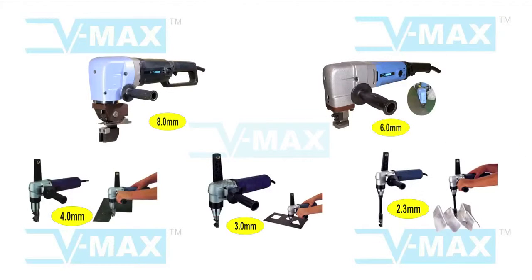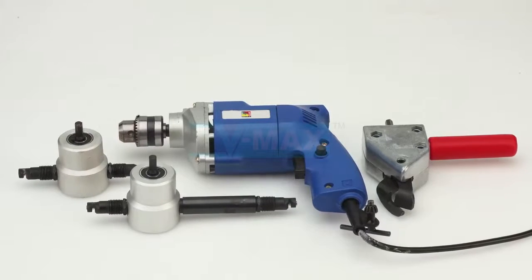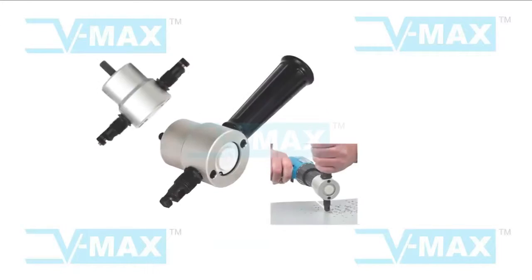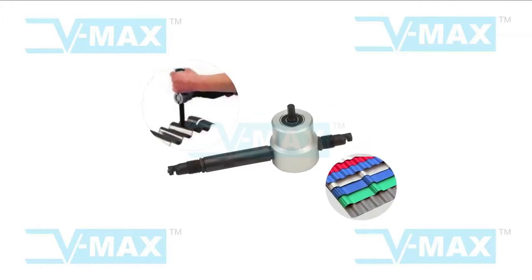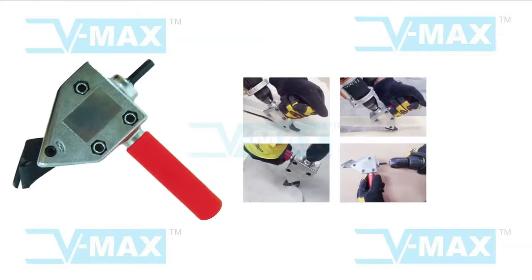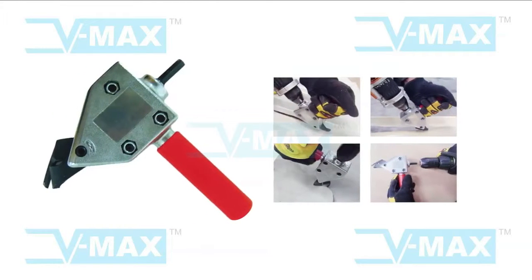Nibblers for sheet metal thickness up to 8mm. Power drill attachments that convert a drill to a nibbler for sheet metal up to 1.8mm. Nibbler and roofing sheet cutter. Shear for sheet up to 1mm thickness.